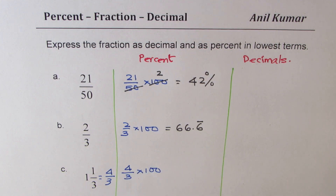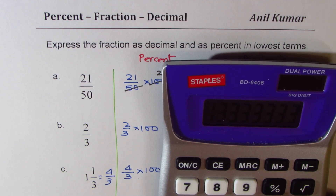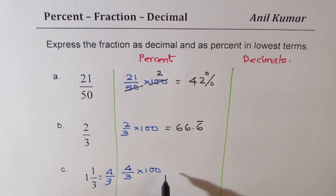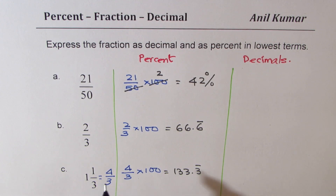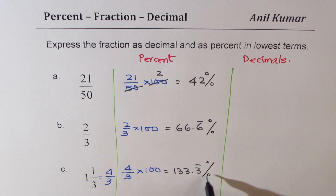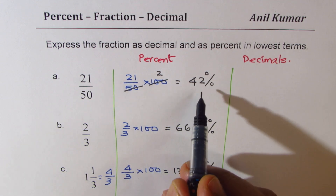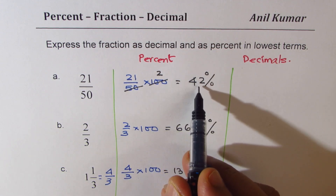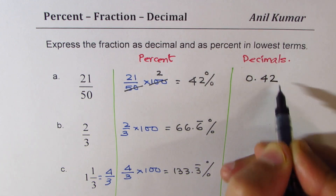Now we have 400 divided by 3. Let us do that also — 400 divided by 3 is equal to 133.3 recurring. You can also do long division. Once you get percent, it is easy to write decimal numbers. For getting decimals, you just place the value. 42 percent means 42 over 100, so that gives you 0.42 in decimals.